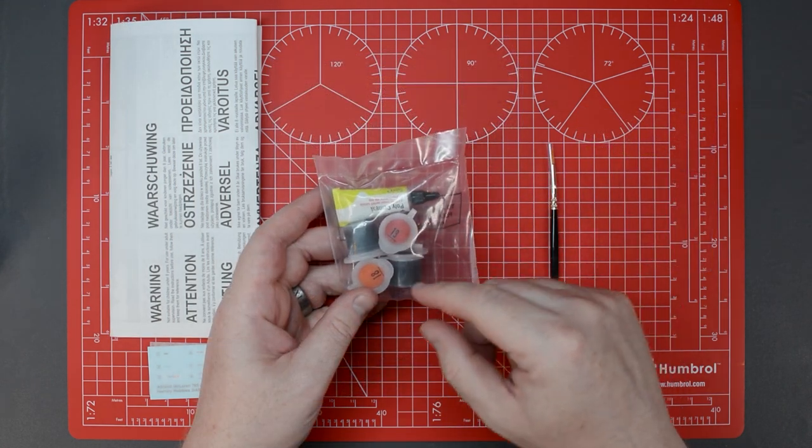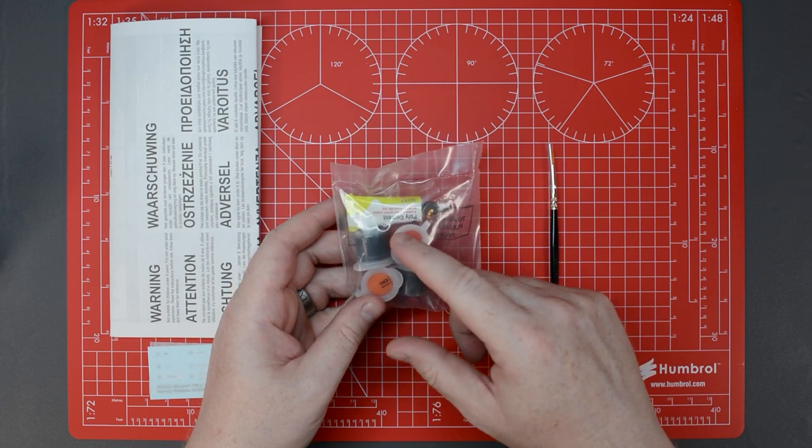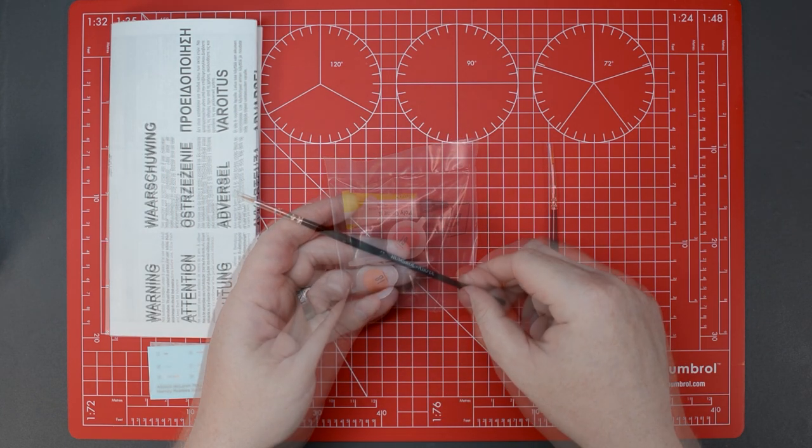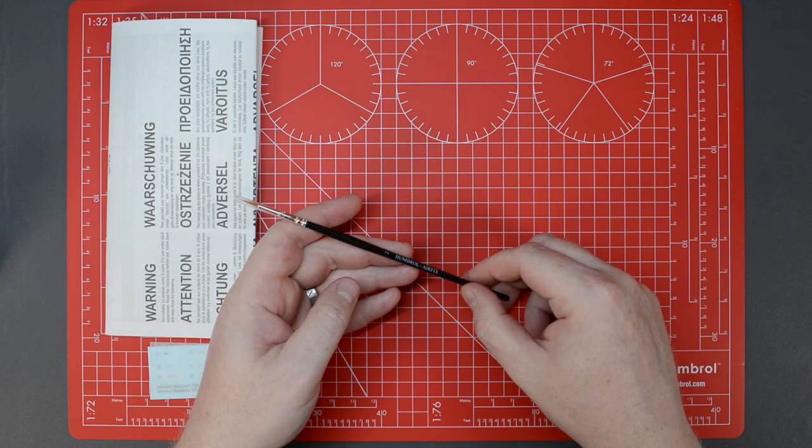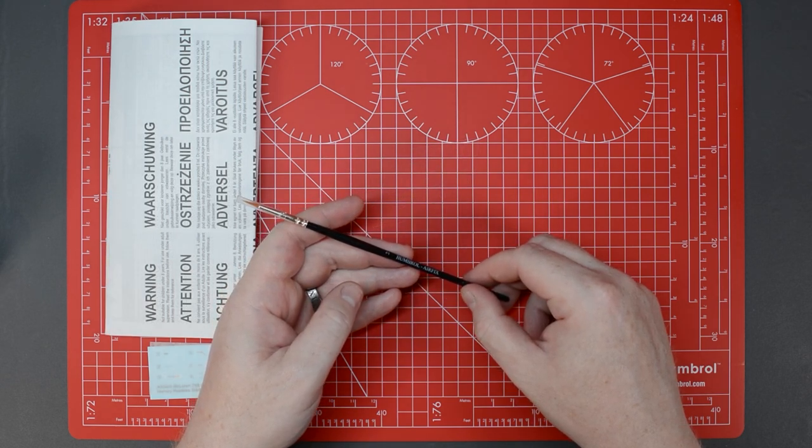In the smaller bag you'll find the four Humbrol acrylic paints to paint the model, a tube of poly cement to glue the kit together, and a number two sized Humbrol Airfix paintbrush supplied with the model as well.